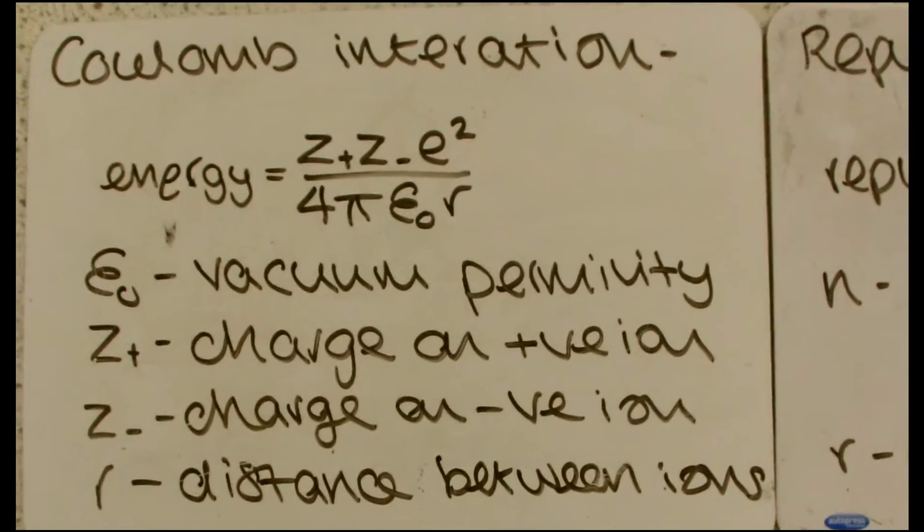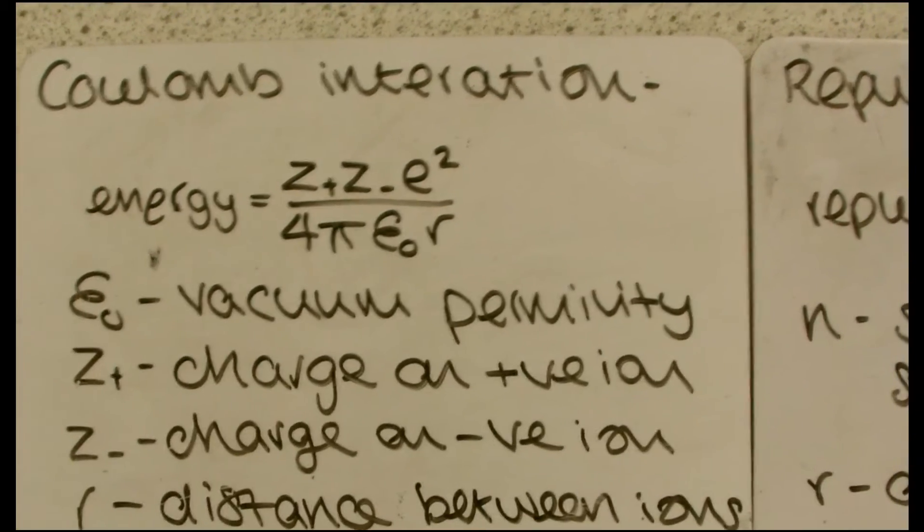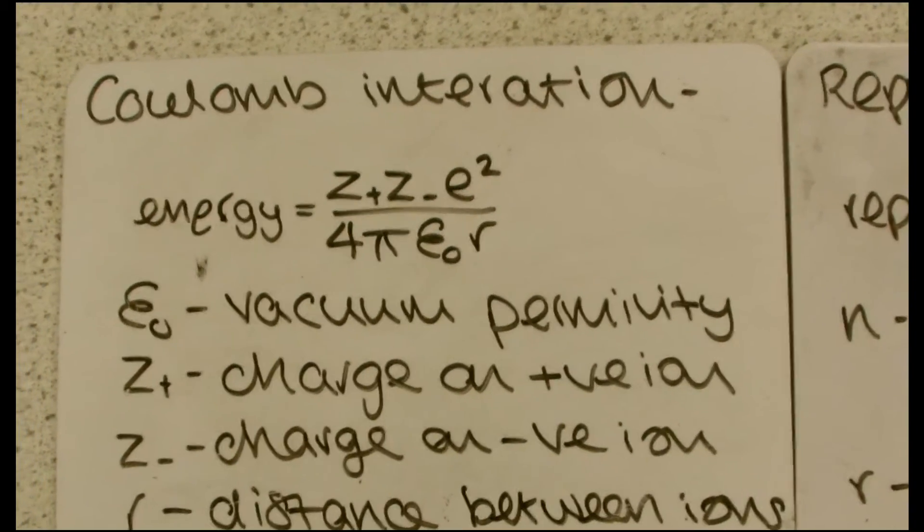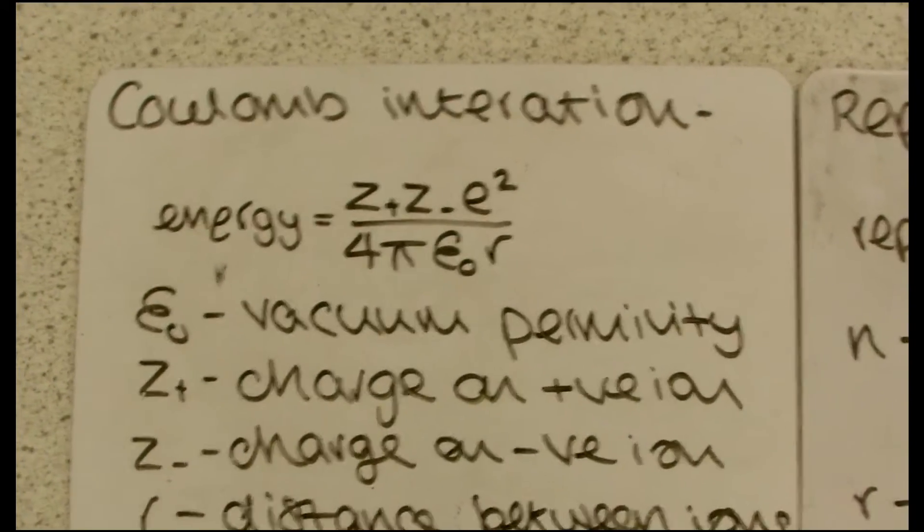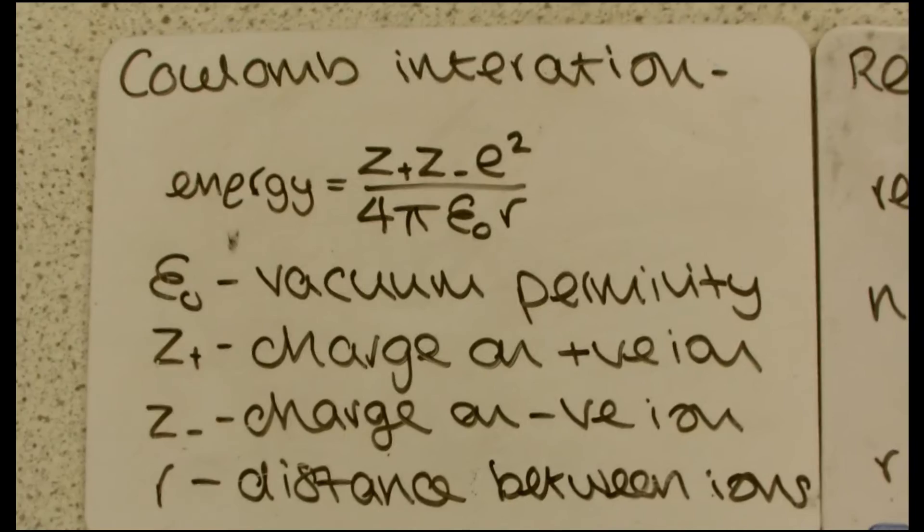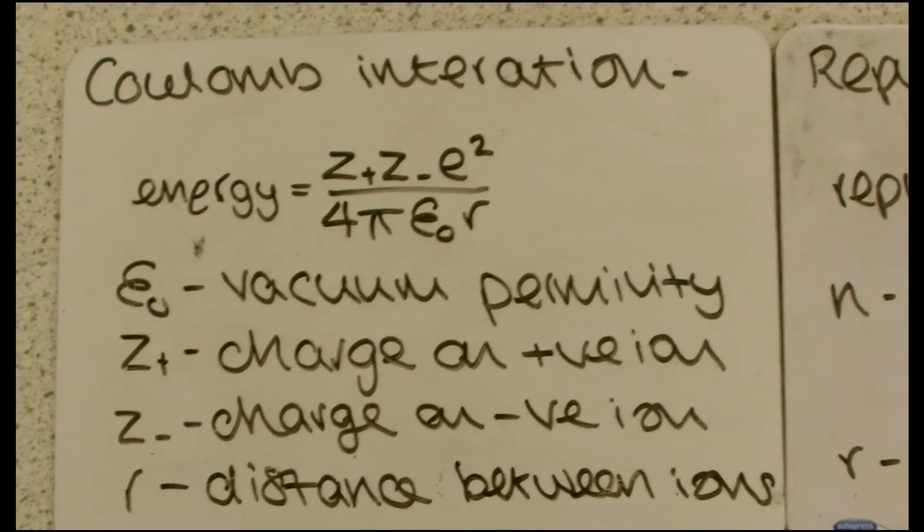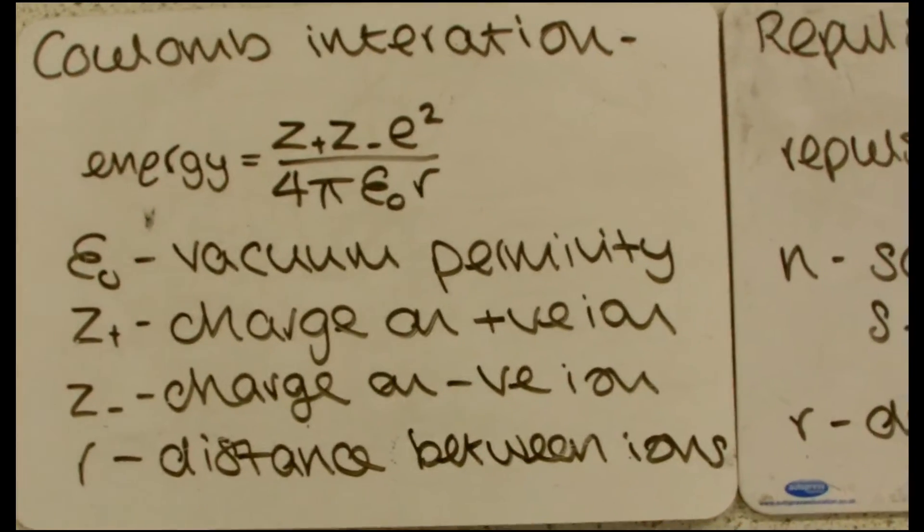And we calculate the energy of that with the two charges multiplied by the charge of the electrons, because that's all we deal with in chemistry. And it's divided by a whole load of constants, vacuum permeability and 4 pi. And then finally, we have the distance between the ions.